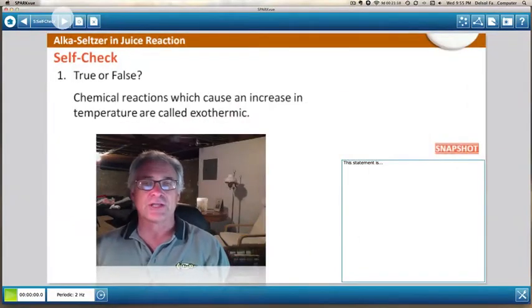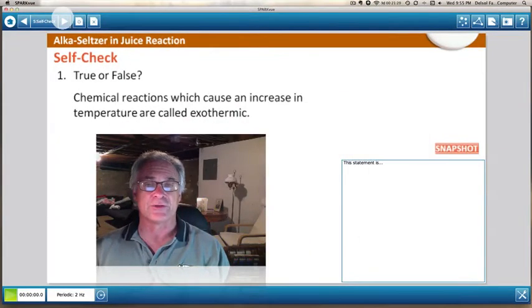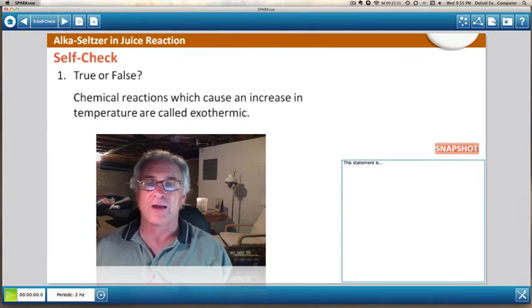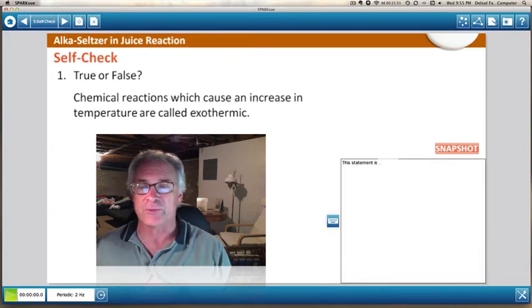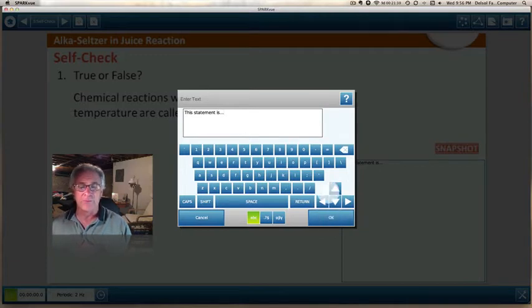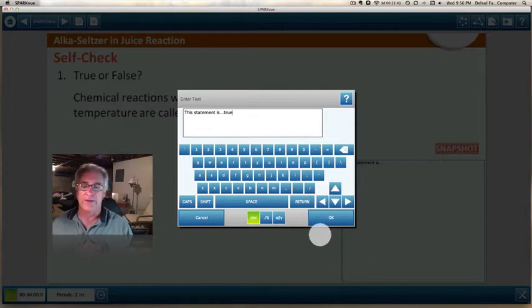Now, reactions that cause an increase in the temperature are called exothermic. Is that true or false? Chemical reactions which cause an increase in temperature are called exothermic. True or false? So what you would do is you'd put your answer in this box by clicking on it. Click on the icon of the keyboard. And then put your answer. You want to say true? Put true. And then hit OK.